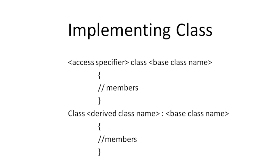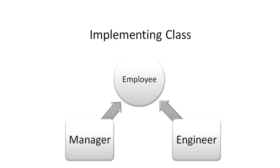To implement inheritance, you need to check the kind of relationship between the base class and the derived class. Ensure that the derived class is a kind of base class. Consider an example of an employee, a manager, and an engineer class. Here the manager and engineer class come under the employee class.